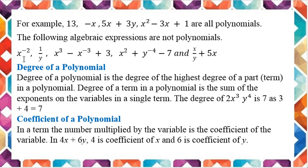The following algebraic expressions are not polynomials. As I mentioned, if the exponent is 0 or positive then it is a polynomial, and if it is a negative number then it is not a polynomial. So in the first example, x has a power of minus 2, which is a negative exponent. Similarly, 1 upon y — when you take y to the numerator it becomes y to the power minus 1. So it is also not a polynomial. Then x cube minus x to the power minus 3 — again a negative exponent, so it is not a polynomial.